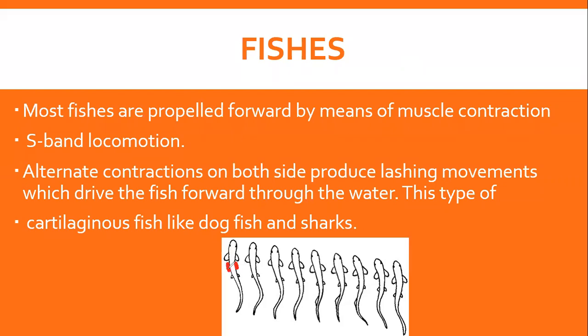Right اور left lateral side والے muscles ایک ساتھ contract نہیں کرتے، یہ باری باری — alternatively — contract کرتے ہیں۔ جس side کے muscles contract کریں گے، body اسی طرف لہراتی ہے۔ Alternatively muscles کے contract اور relax کرنے سے lashing movement ہوتی ہے اور ایسا لگتا ہے کہ fish spiral انداز میں تیرتی جا رہی ہے۔ اسے S-band locomotion کہا جاتا ہے۔